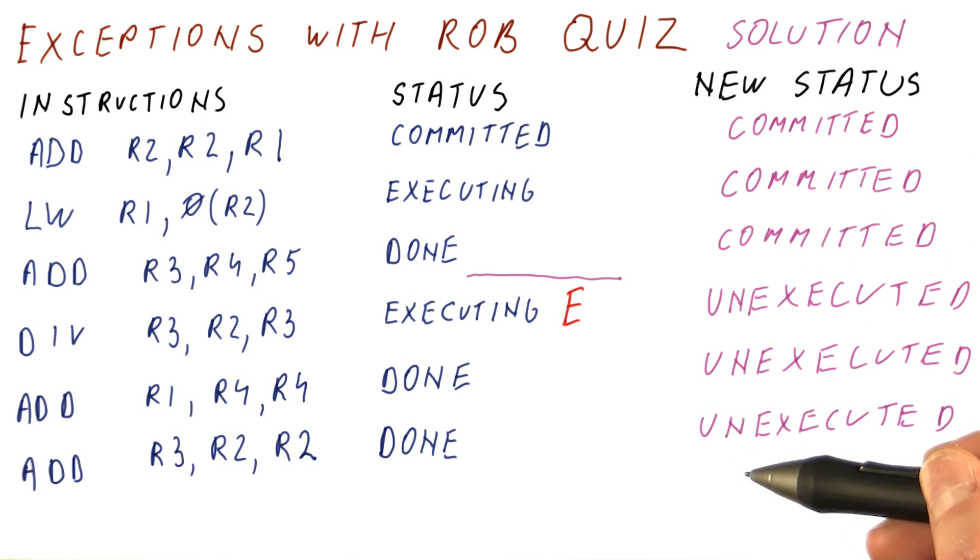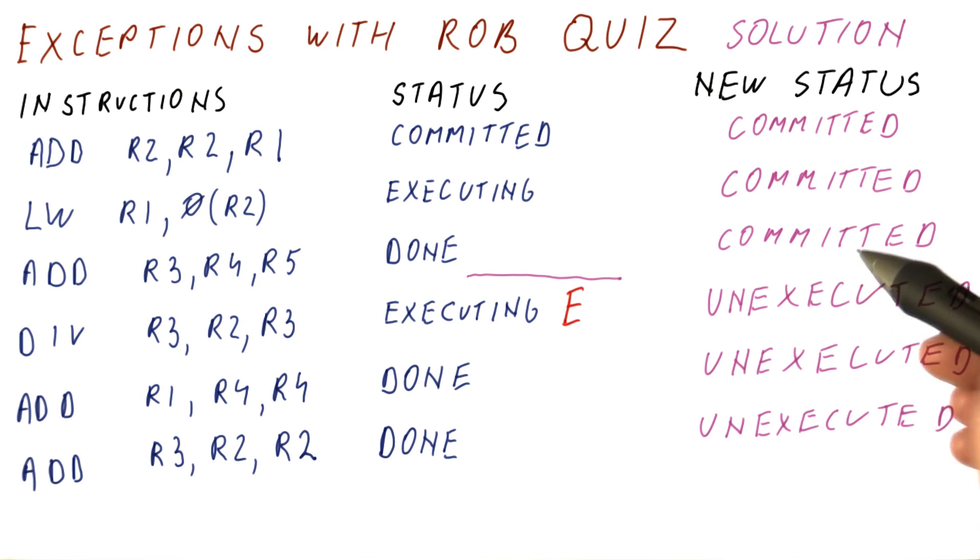Some of them haven't been even fetched. They have been actually fetched, but we have discarded them so they behave like they haven't been fetched. And that's the point where the control is transferred to the exception handler. So it acts very much like a branch misprediction except that it happens on an exception.